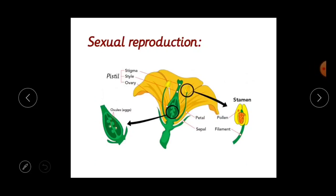Now we are going to study sexual reproduction. Sexual reproduction is the production of new plants obtained through seeds — it needs seeds to reproduce. The flowers are the reproductive parts of a plant.